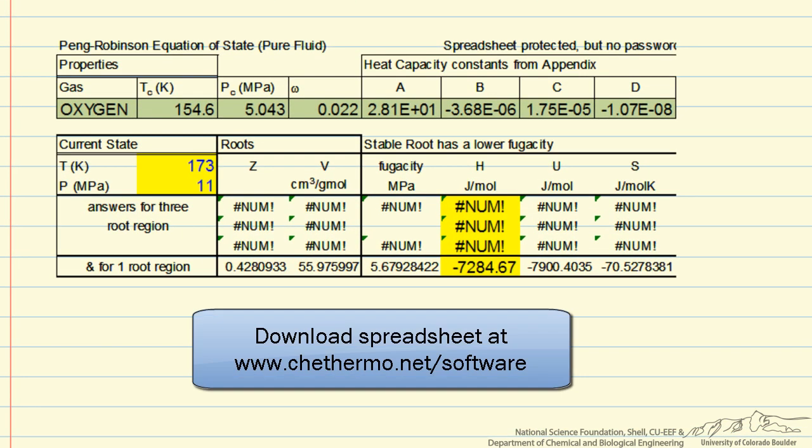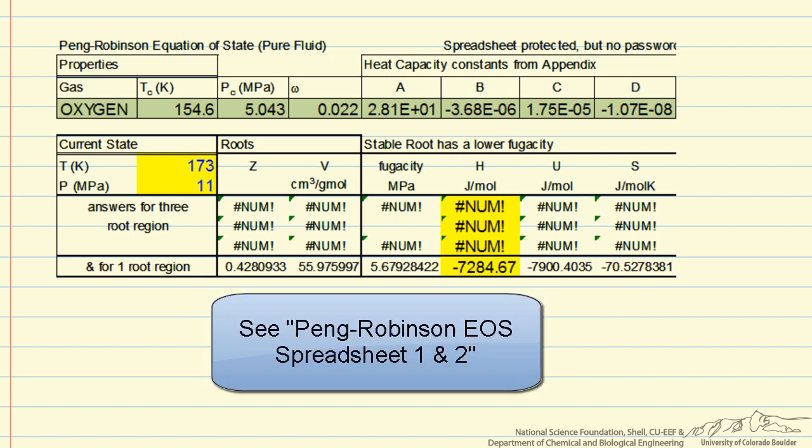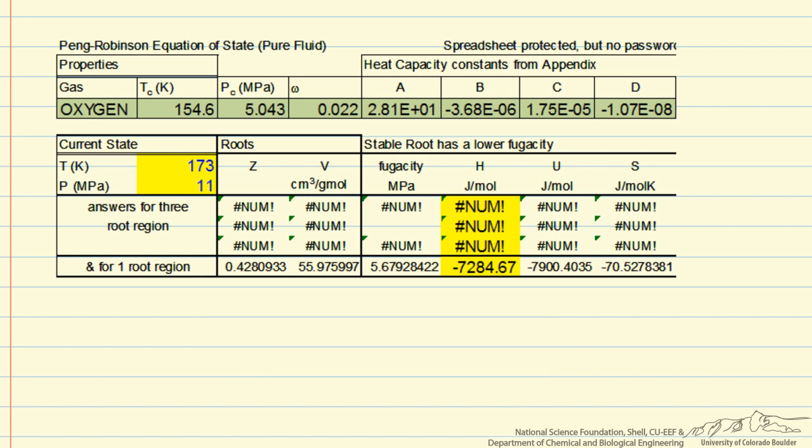So we're going to use the Peng-Robinson equation of state. Use a spreadsheet from the thermodynamics textbook by Elliott and Lira. That's available online. And details of how to use the spreadsheet are given in other screencasts. For oxygen, we have to look up the critical heat capacity values, pressure, temperature, and acentric factor from the spreadsheet. And I've put in the initial conditions, you can see in yellow, coming at 173 Kelvin, which is minus 100 degrees C, and 11 megapascals, which corresponds to 110 bar.